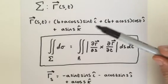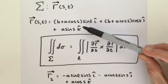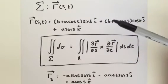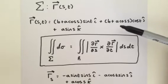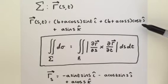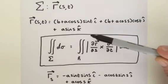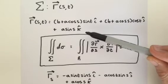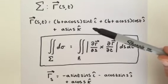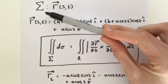It was given by b plus a cosine of s times the sine of t times i plus b plus a cosine of s times the cosine of t j plus a sine of s times k. And that gave us our surface area capital sigma.